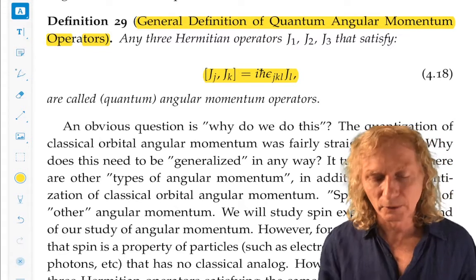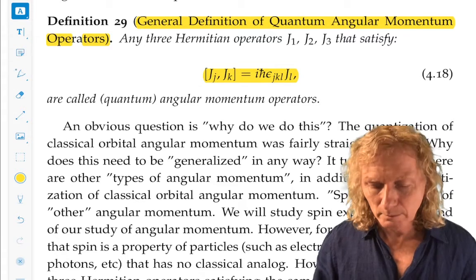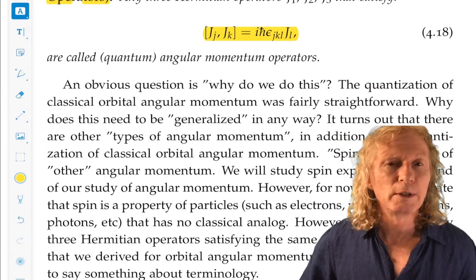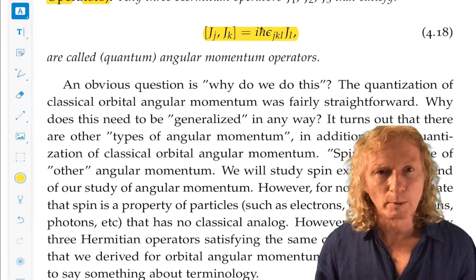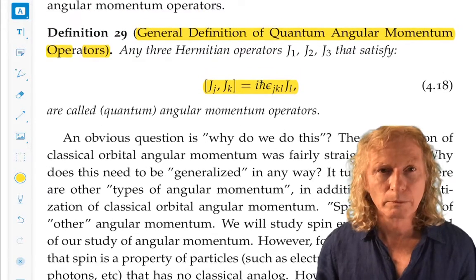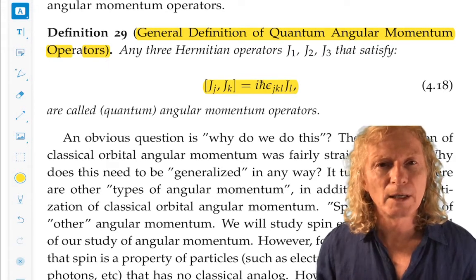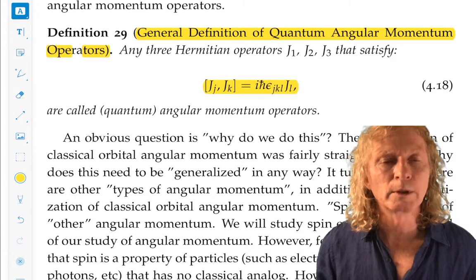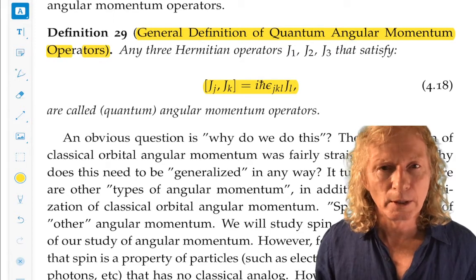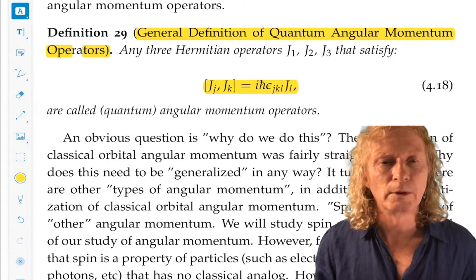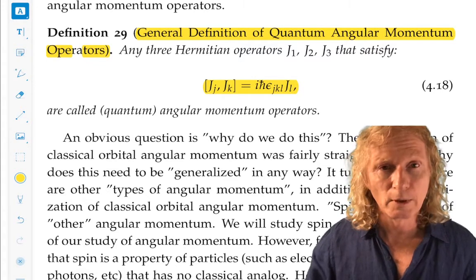So why are we doing this? Well, it turns out that in quantum mechanics there are a number of different types of angular momentum. And what is common amongst them all is they have the same algebraic structure. They have the same commutation relations amongst the operators, the self-adjoint operators that define them.